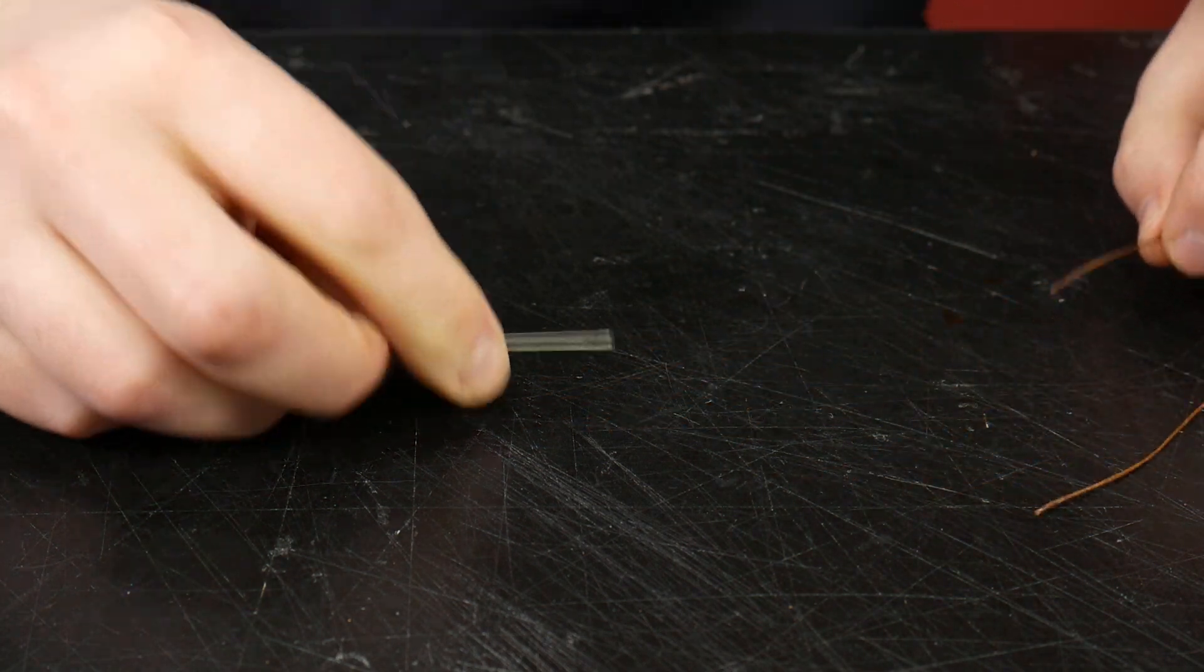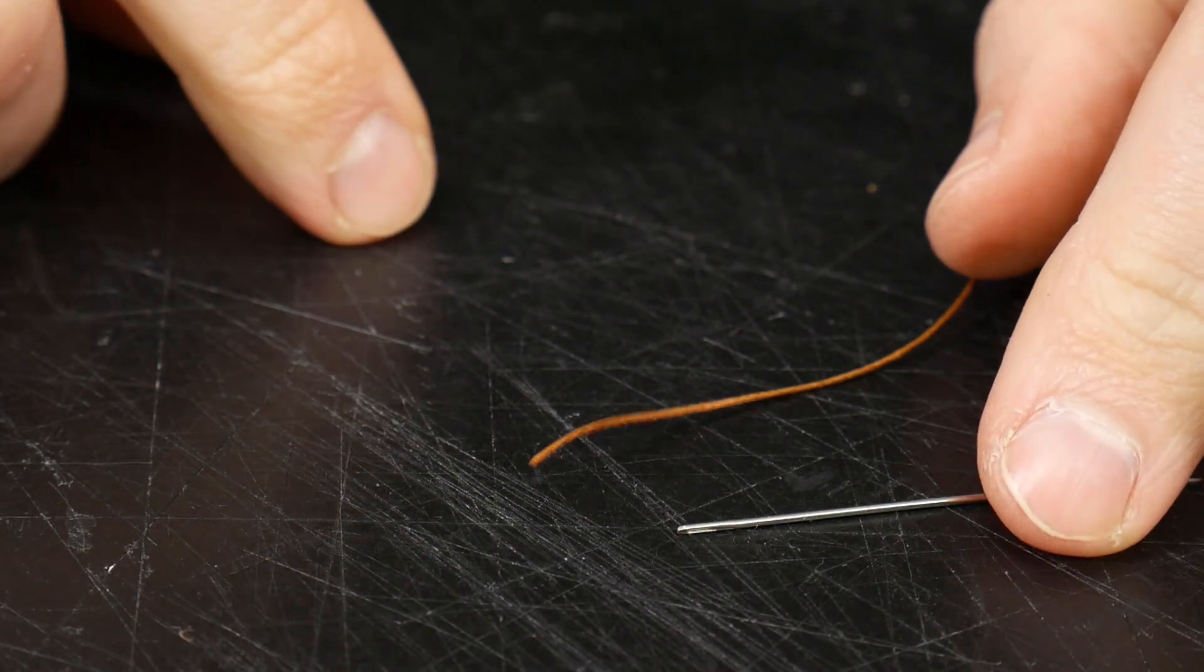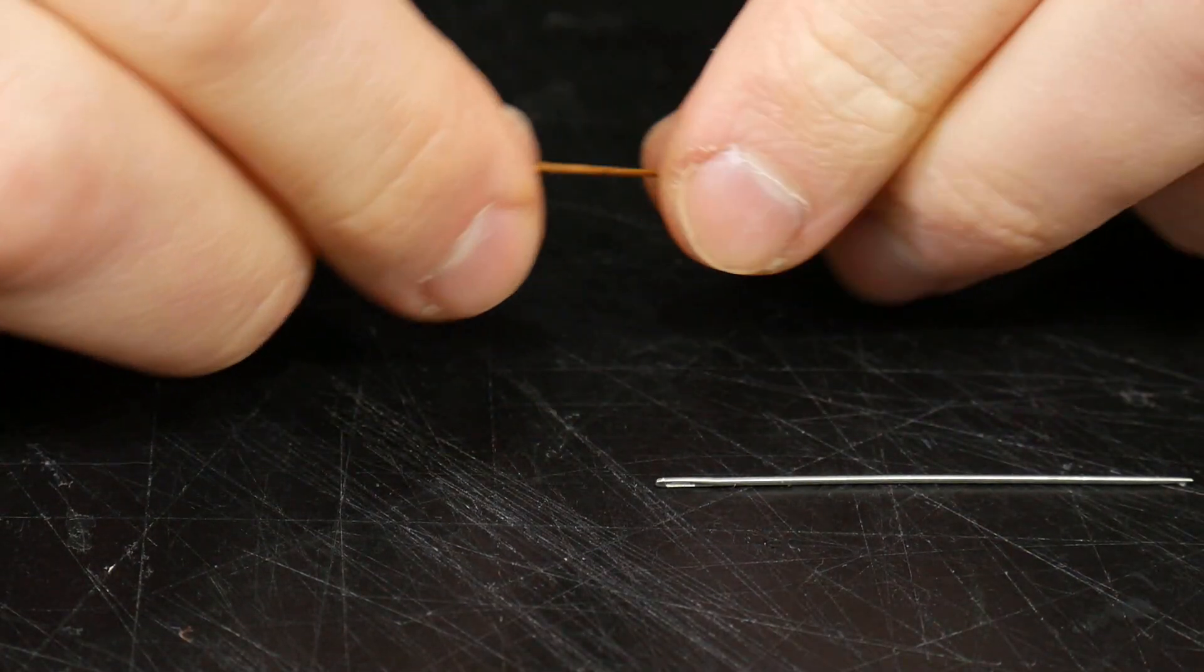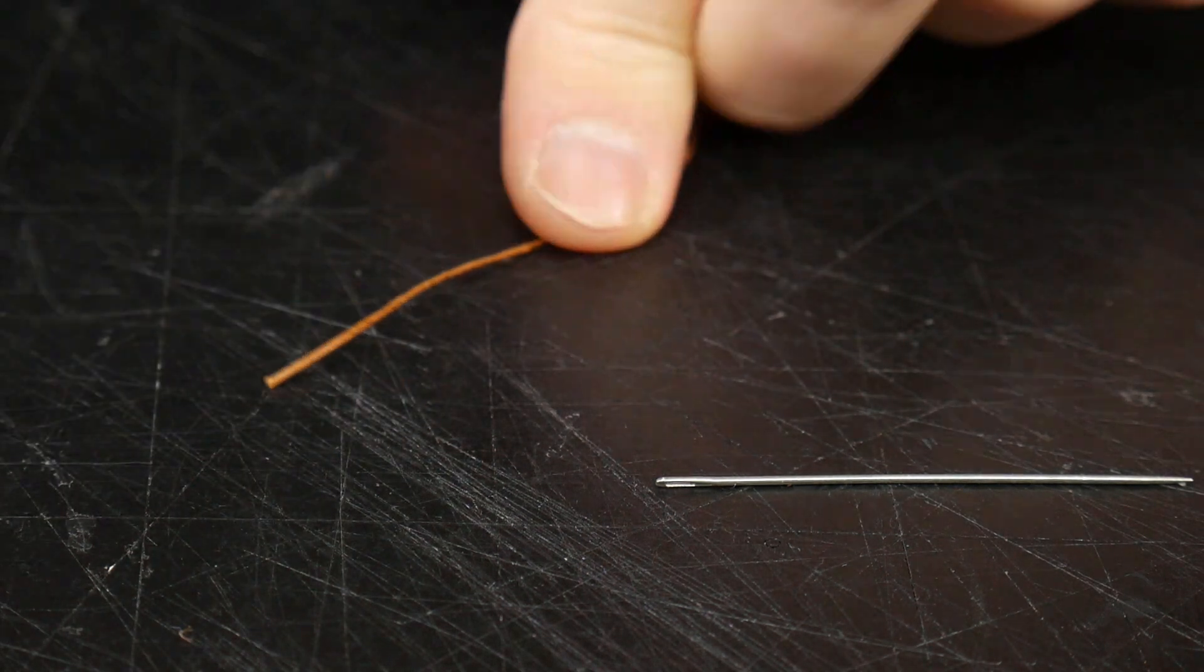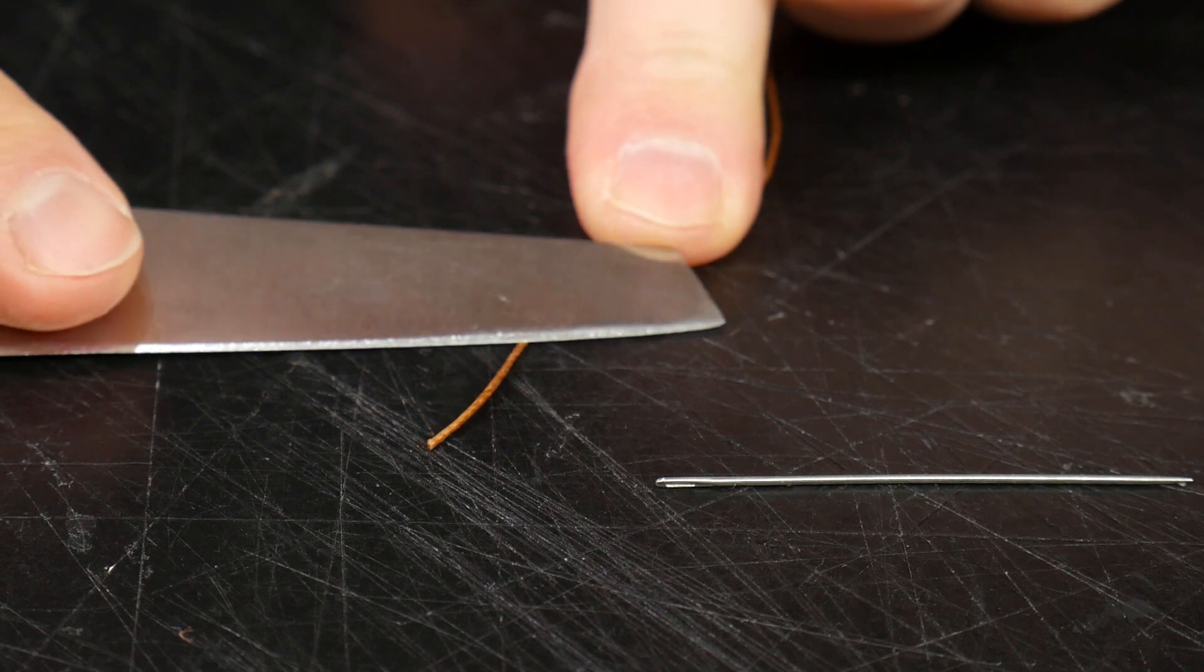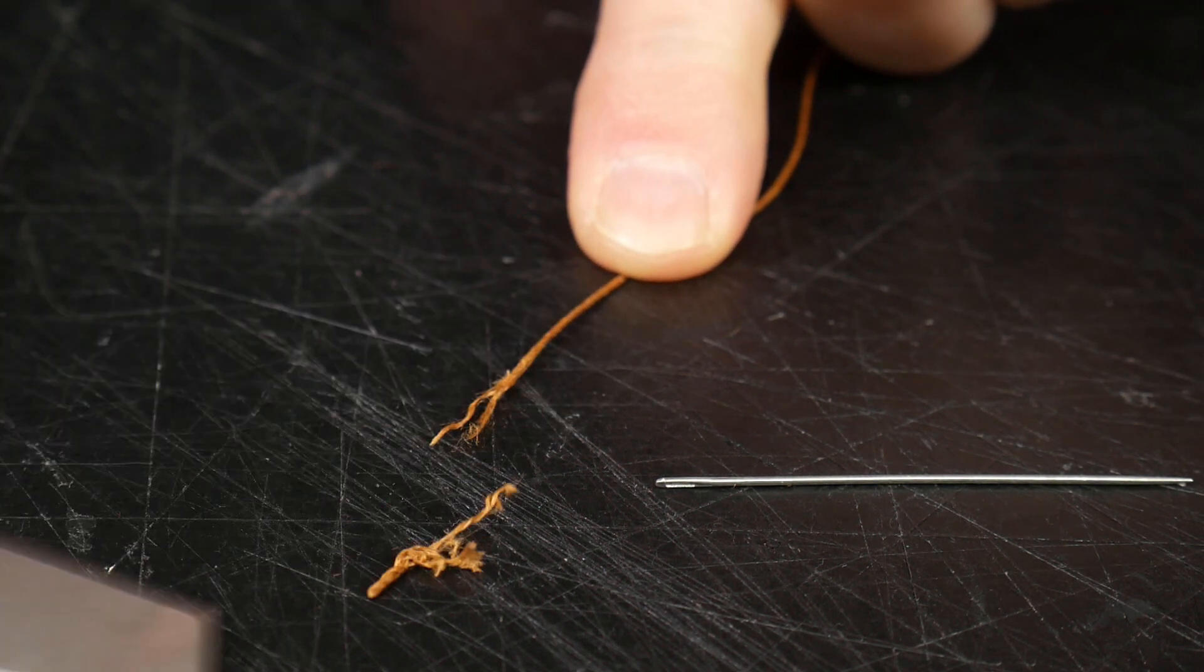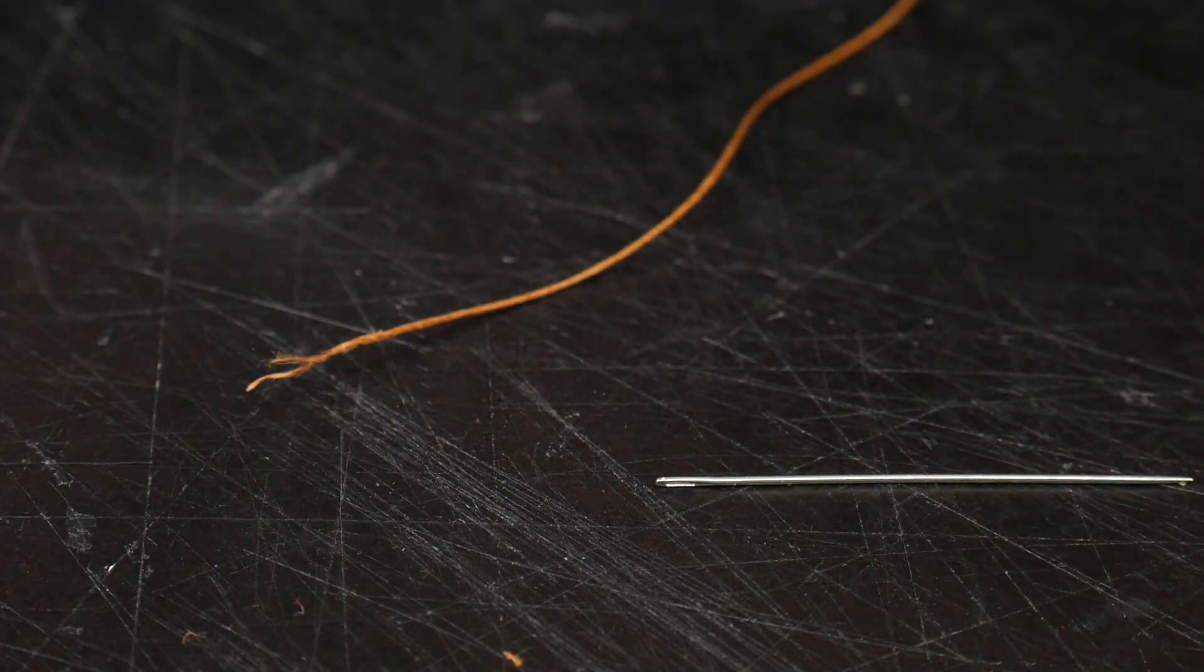So there's two methods. The traditional way I'll show you first. Now the traditional method is to take your thread and we're going to taper it down towards the end. So taking a sharp knife, gradually coming in and just taking off the end and tapering it like so.